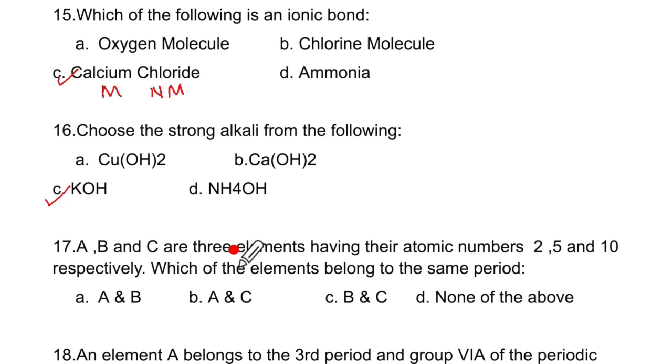A, B, C are three elements having their atomic numbers 2, 5 and 10. So A is going to be 2, B is 2, 3 and C is 2, 8. This is helium and this is neon. Which elements belong to the same period? Same period means same number of shells. These are two shells and two shells. So B and C the correct option.